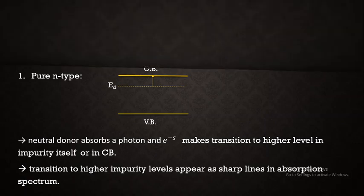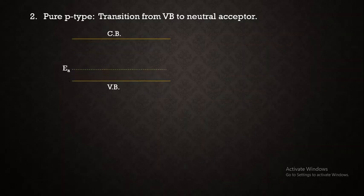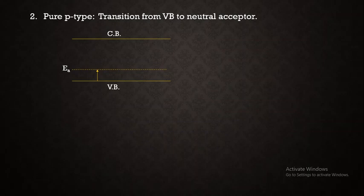For a pure P type semiconductor, the energy level diagram shows an acceptor level just above the valence band due to trivalent impurities. Here, transition takes place from the valence band to the neutral acceptor after absorbing energy from the photon. The electron present in the valence band absorbs energy from the incident photon and ionizes or makes a transition to the neutral acceptor level EA, where acceptors are in need of electrons.